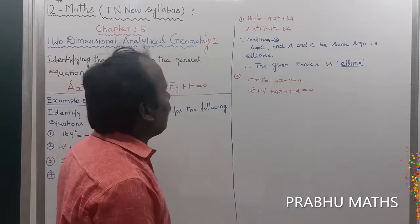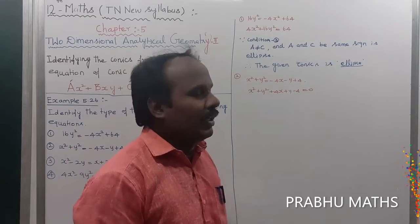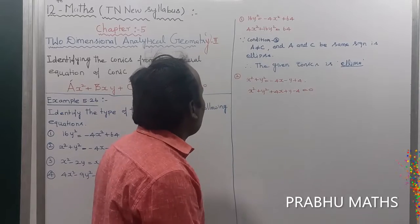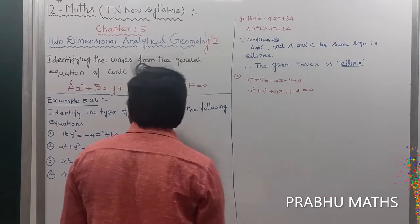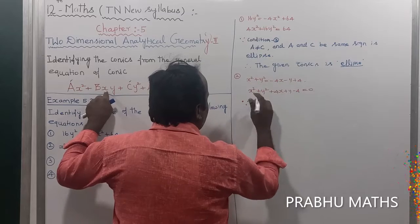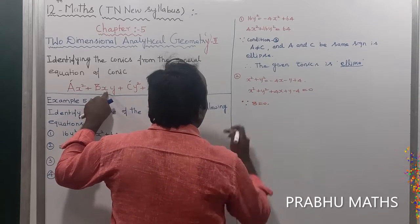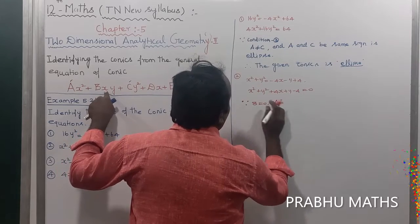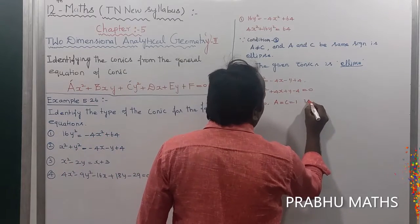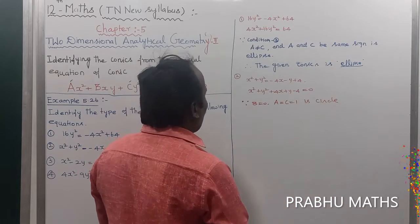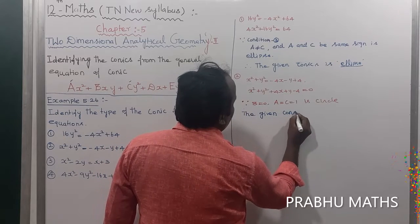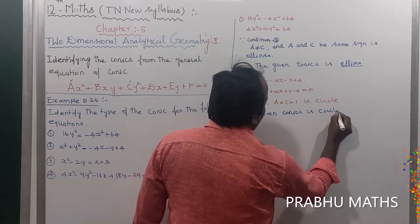The condition a ≠ c is not satisfied here, so it is not a parabola, not an ellipse, and not a hyperbola. The remaining condition is b = 0, meaning there is no xy term in this equation. Also, the coefficient of x² equals the coefficient of y², so a = c. This condition means the given conic is a circle.